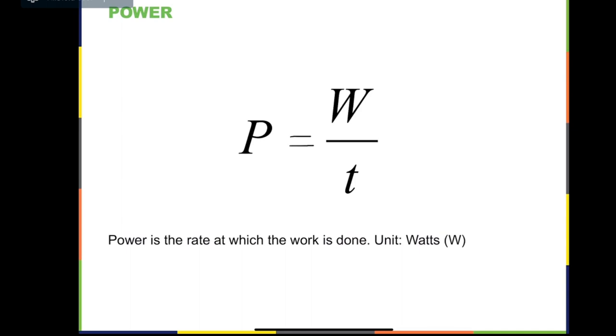The unit of power is watt, equivalent to joule per second. Another unit of power that is still used in some circumstances is horsepower. Every horsepower is equal to 10,000 watts.